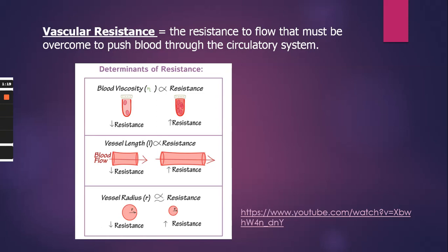Focusing on vascular resistance, there are some determinants or factors that play a role. The first one is blood viscosity. Think 'viscous' — what that means is how thick the blood is. Blood overall is pretty viscous, pretty thick, and the reason why has to do with the proteins that are in the blood and also the cells that are found there.